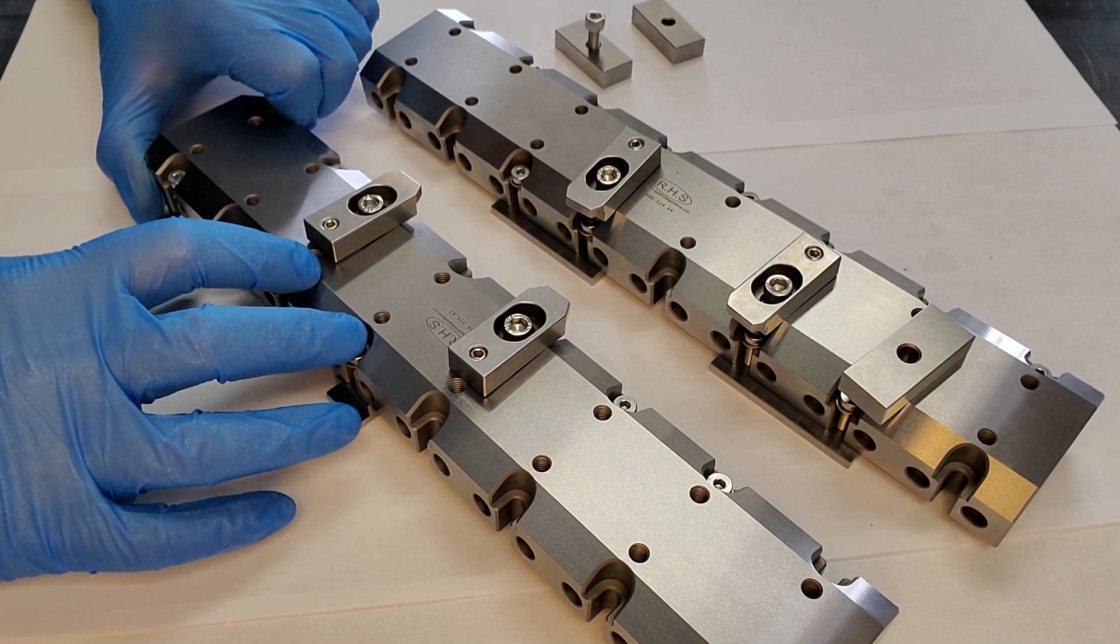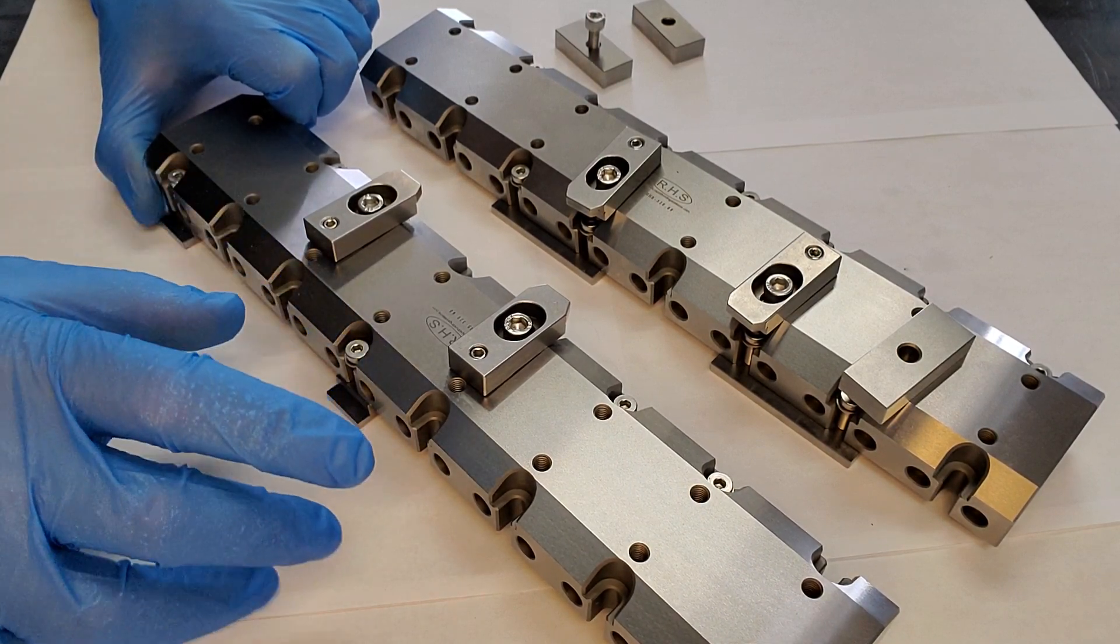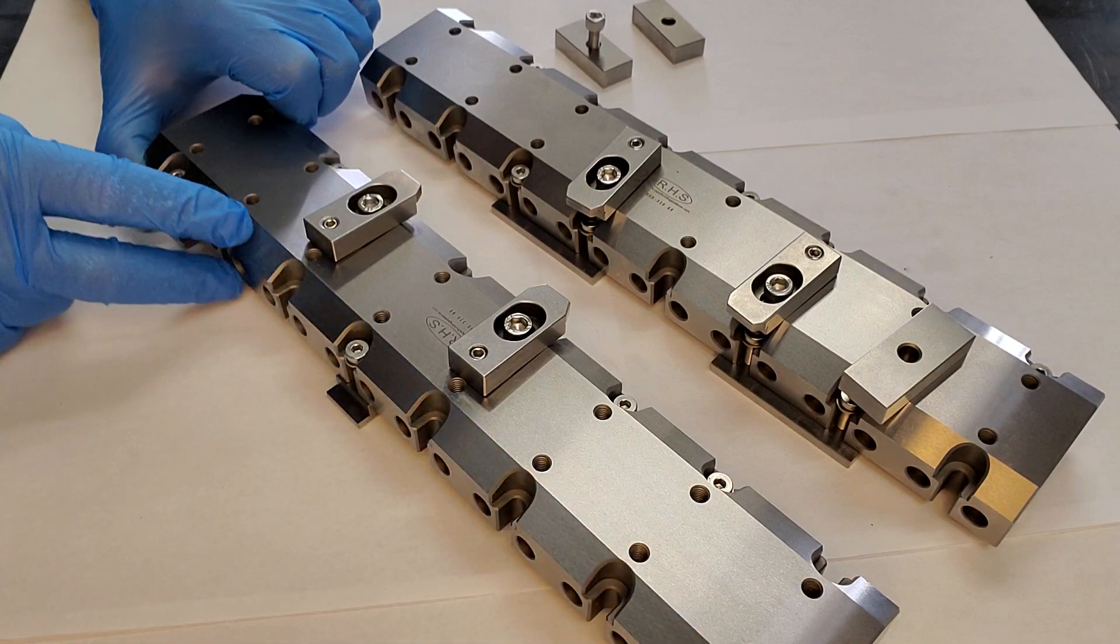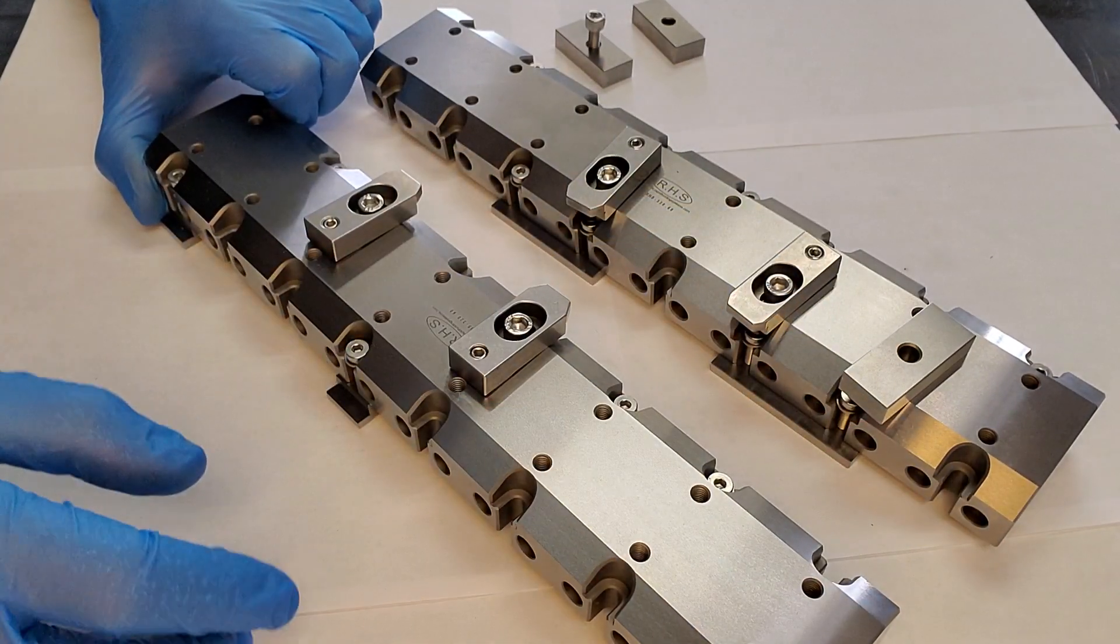They're compatible with some of the 3R clamping beams, but the 3R version doesn't have both sets of clamping on either side.